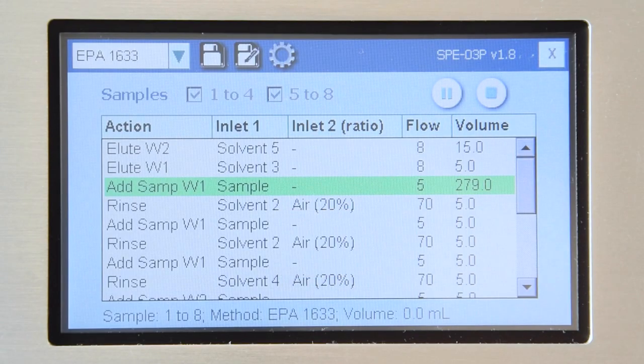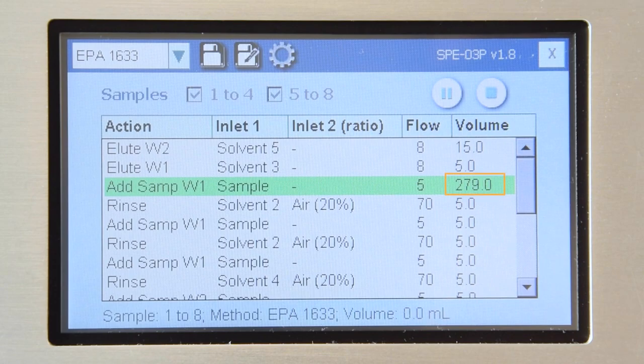Fortunately, that's no problem at all for the SPE03. You can simply program a volume that's slightly larger than the actual sample volume. In this case, these 250 milliliter sample bottles can only hold 279 milliliters at maximum, so we programmed the step to add 279 milliliters. And if you had to estimate, how long would a full extraction take?